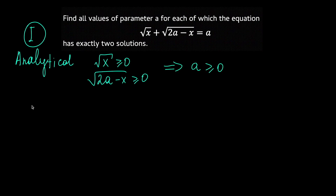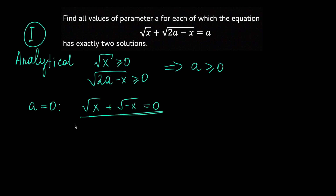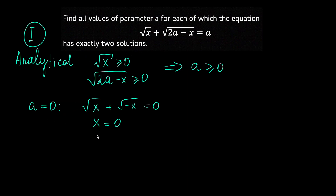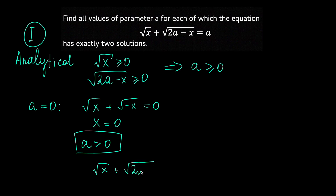Moreover, A is not equal to 0, because if it is equal to 0 then we have the equation √x + √(−x) = 0, whose only solution is x = 0 — but I need exactly two solutions. So A = 0 doesn't fit. My first observation is that A is a strictly positive number, which is going to help a lot. Let's write down the equation and think about what we can do here.